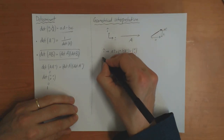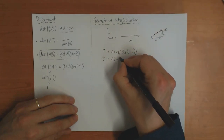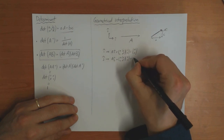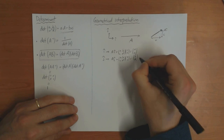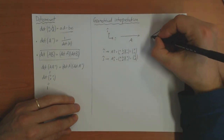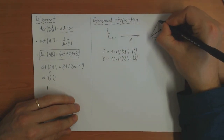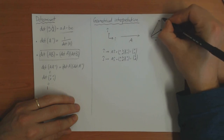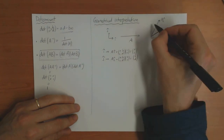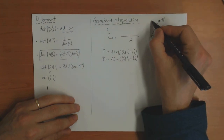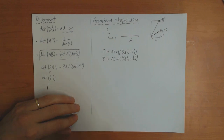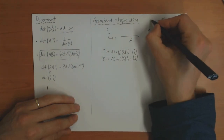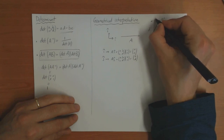Similarly, the second basis vector J will go into A times J. It's the matrix ABCD times (0, 1), which gives (B, D). So this second basis vector J goes into another vector up here. It forms a shape where the height is D and the width is B.